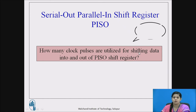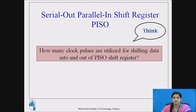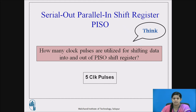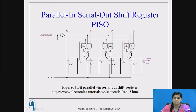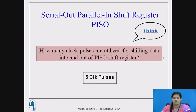I request you to pause the video and think: how many clock pulses are utilized for shifting the data into and out of the PISO shift register? You can refer to the previous diagram. Welcome back. The answer is 5 clock pulses — 4 clock pulses to shift the data out serially from the register, and 1 clock pulse to load all the data simultaneously in parallel. So totally 5 clock pulses are required.